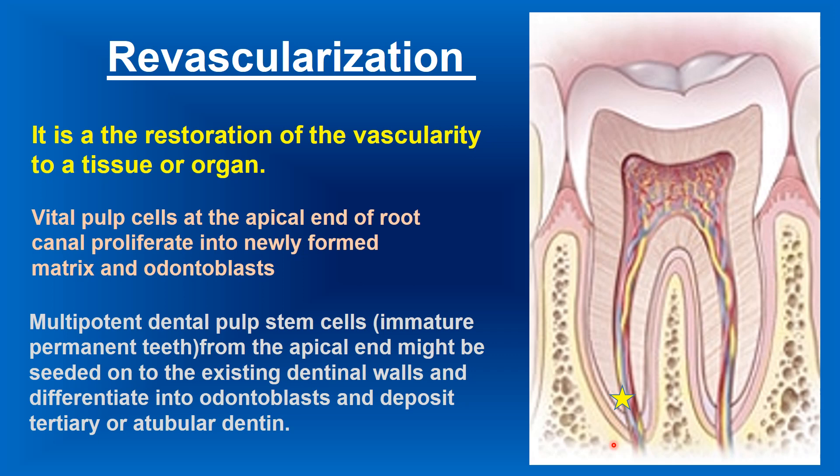Multipotent dental pulp stem cells from the apical region might be seeded to the existing dentinal wall and differentiate into odontoblasts, then deposit tertiary or atubular dentine.